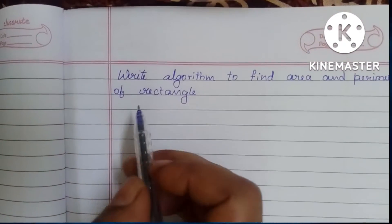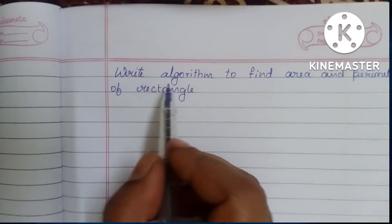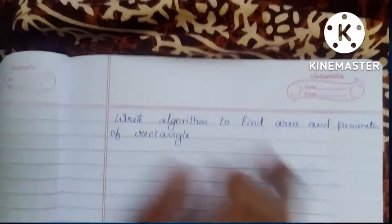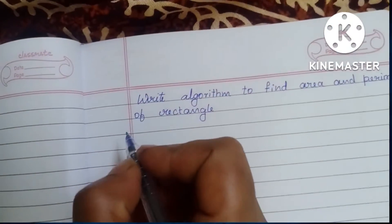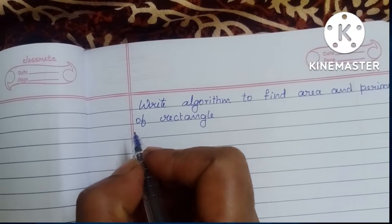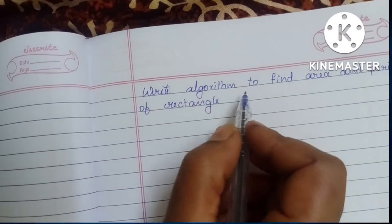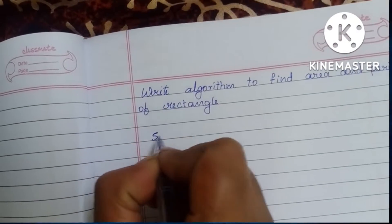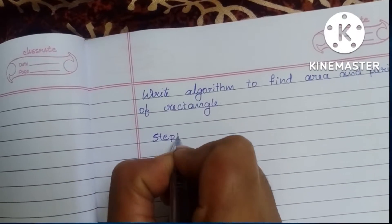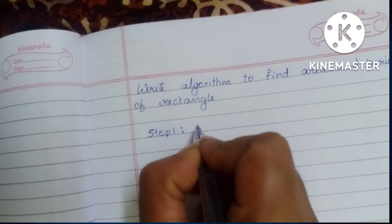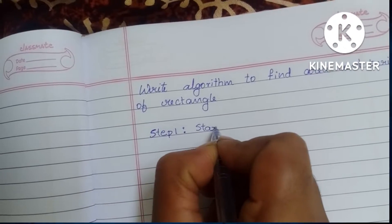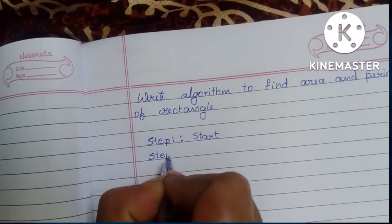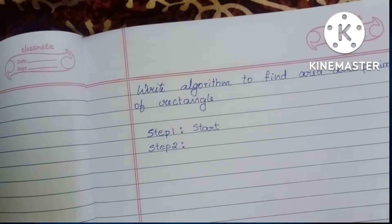In this video we're going to learn how to write an algorithm to find the area and perimeter of a rectangle. An algorithm is a step-by-step process to solve a problem. An algorithm always starts with the start statement, so Step 1: write down 'Start'.